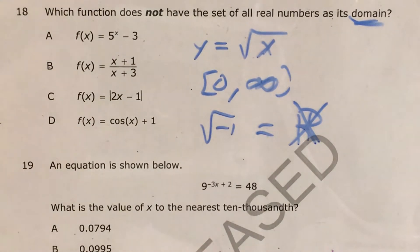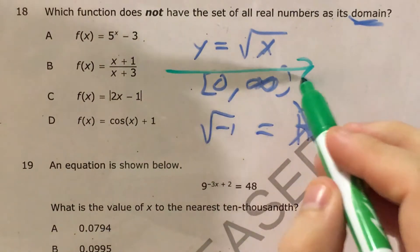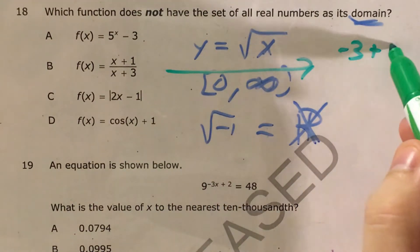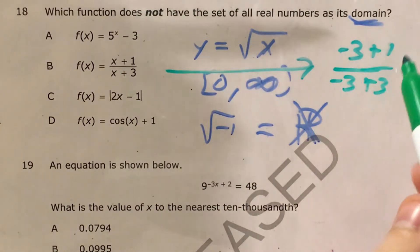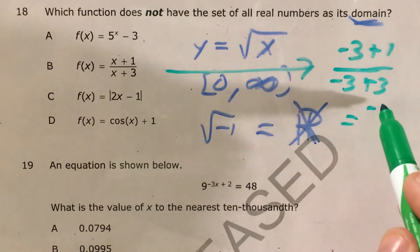And so when I see that X of negative 3 gives me an error, if I want to test that for choice B, then I actually go ahead and plug that in. So that's negative 3 plus 1 over negative 3 plus 3.